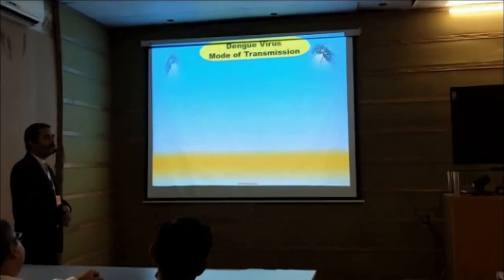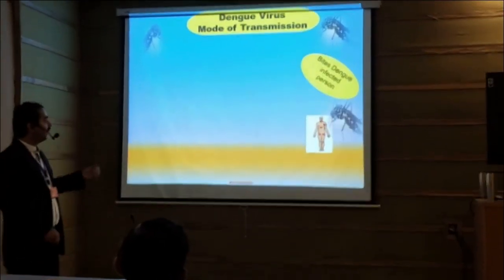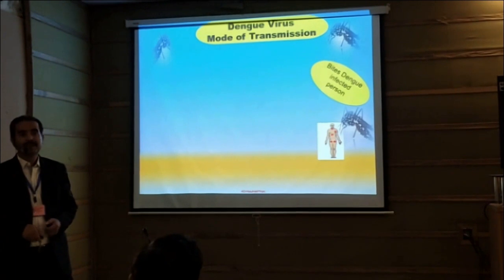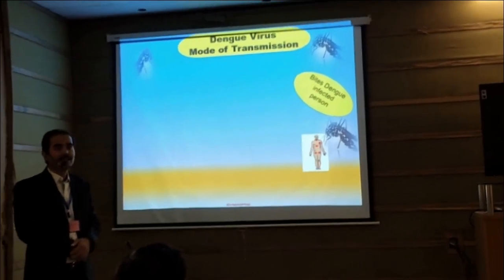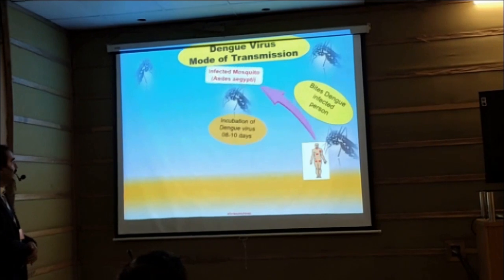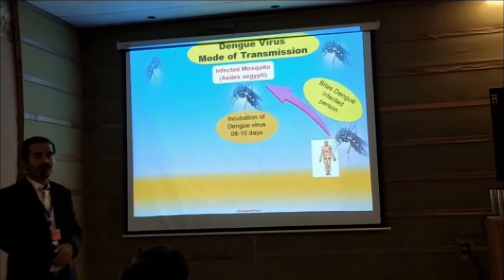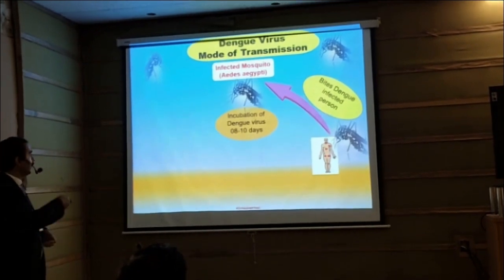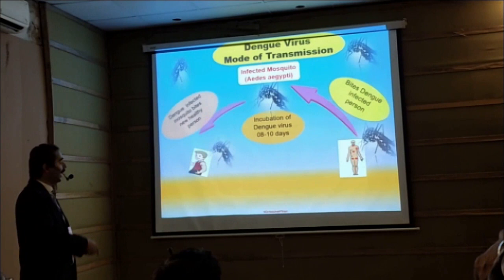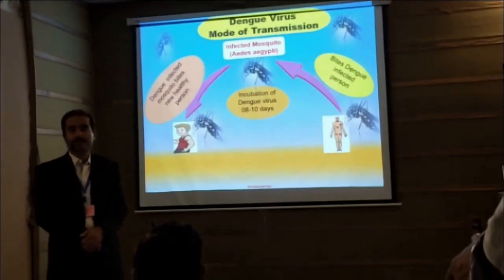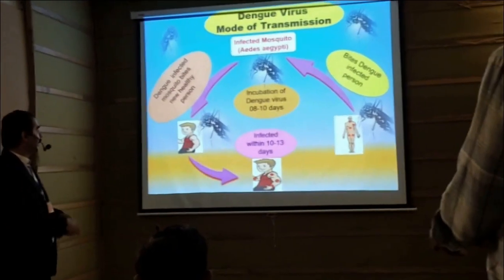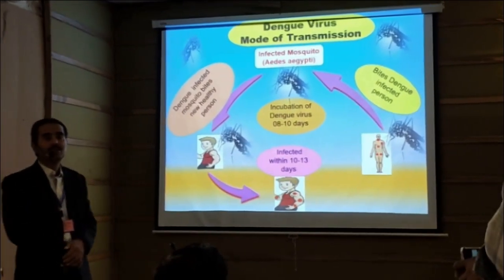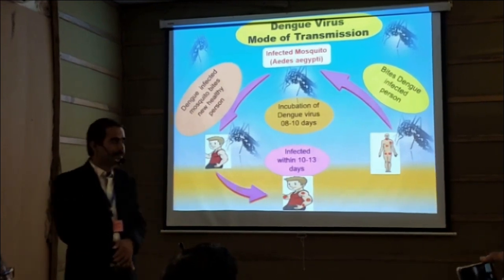Mode of transmission — how does this virus transmit to humans? Firstly, if any person is infected with the Dengue virus, when a mosquito bites that person, it will carry the virus. Finally, this virus will replicate within the mosquito, and within 8 to 10 days after replication, when this mosquito bites any other healthy person, that healthy person will also be infected within 10 to 13 days. This is the example of the infection of the Dengue virus through the mosquito Aedes aegypti.